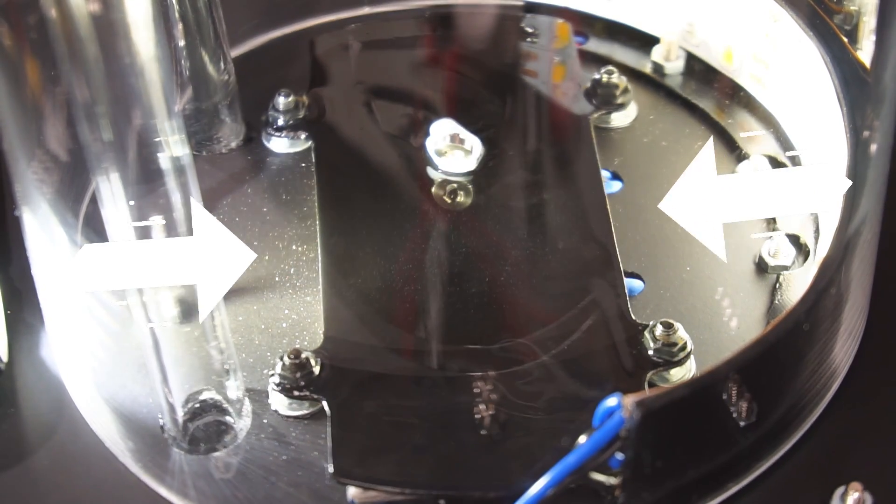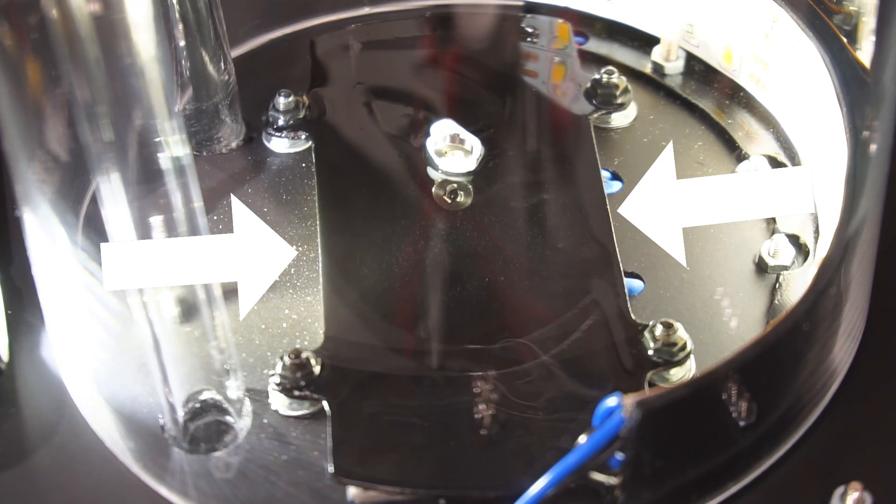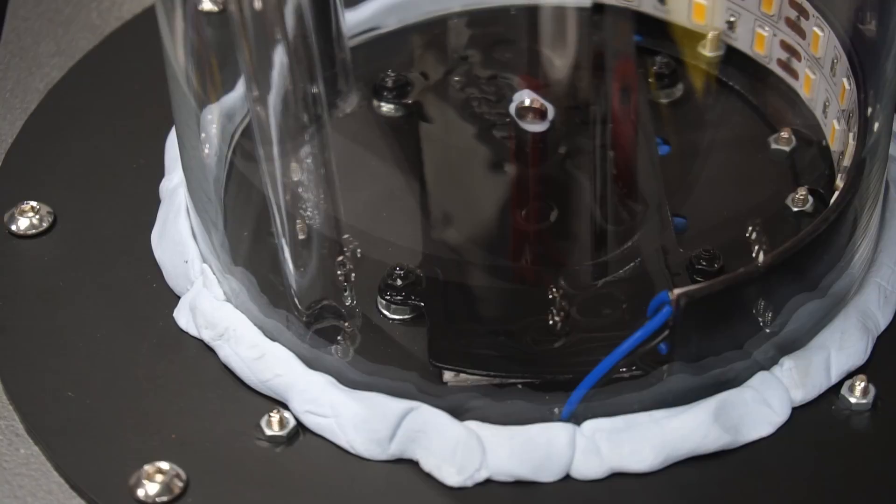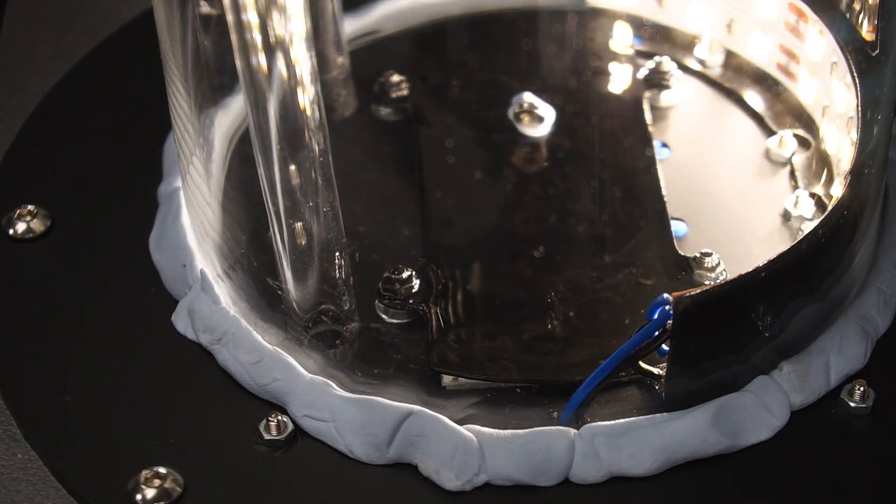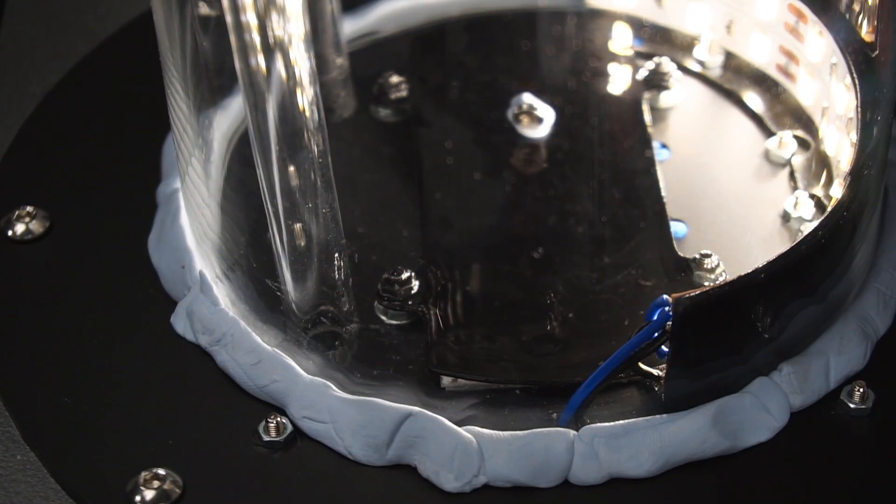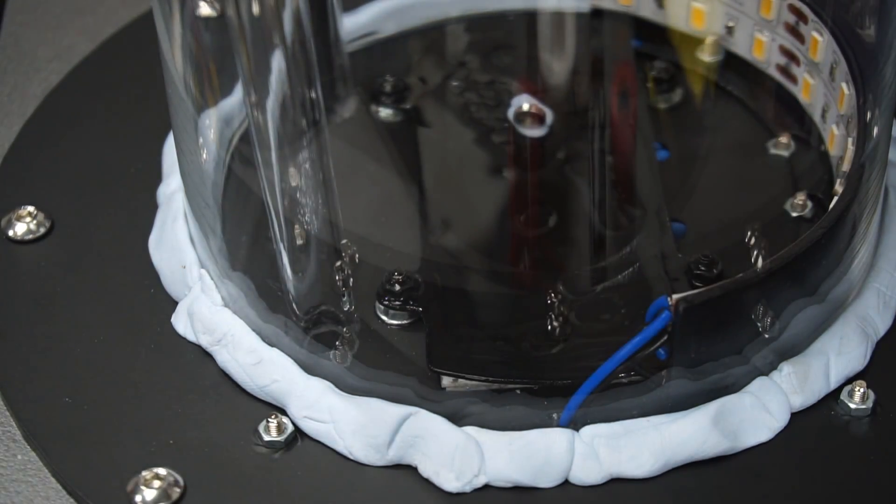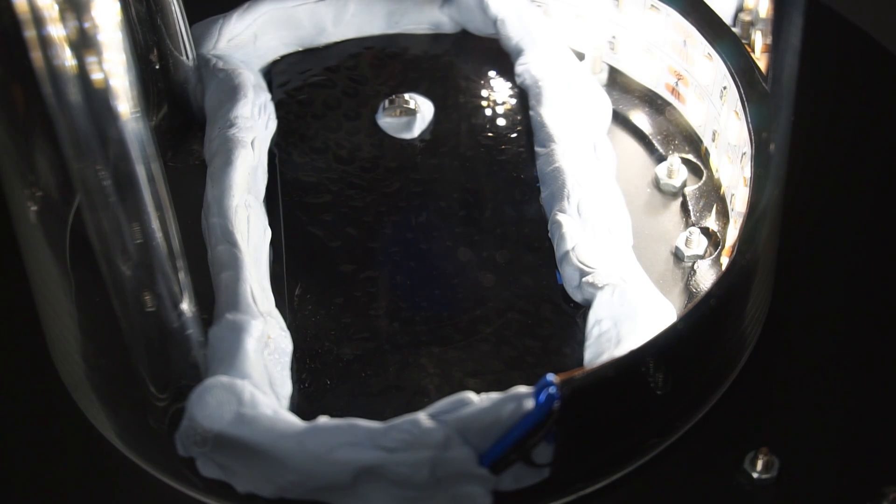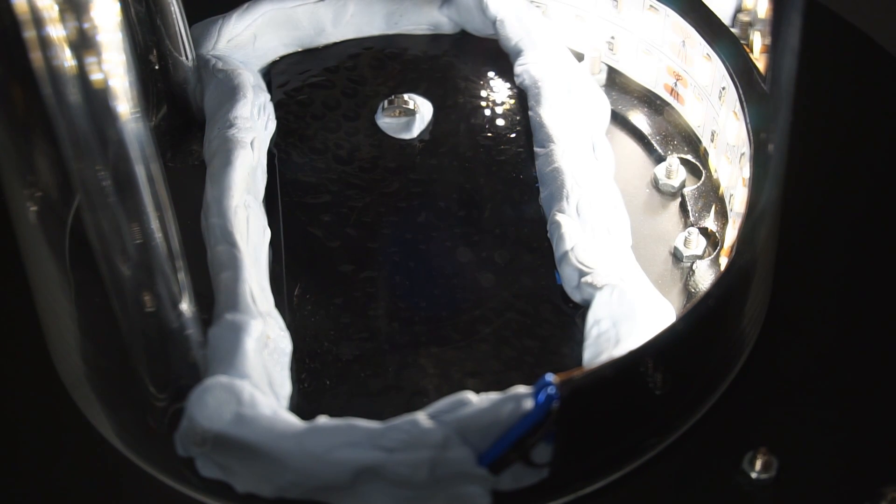You'll notice the fog seems to be rolling off the sides of my cold plate. So I sealed the glass dome with tack and retested. Sadly it made no difference. It seems the alcohol fog is heavier than air and naturally wants to sink to the bottom of my chamber. Next I tried making a brim around the cold plate with more tack and retested.